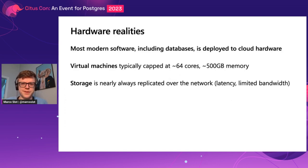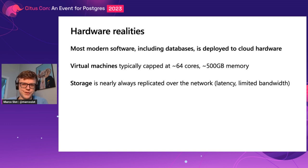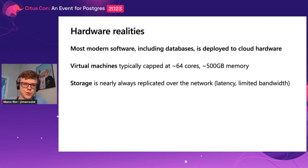And then you run into various scalability problems. You have to think in terms of the hardware realities of today. Nowadays, most software including databases is deployed to cloud hardware — virtual machines in data centers. Virtual machines are very convenient, you can get as many as you want whenever you want. But they are typically capped at a certain size, let's say 64 cores, maybe half a terabyte or a terabyte of memory. And storage is nearly always a network-attached disk that's replicated over the network, which is nice for availability and durability, but it incurs some latency and limits your storage bandwidth in terms of IOPS.